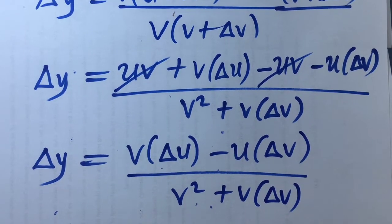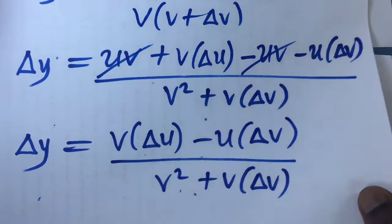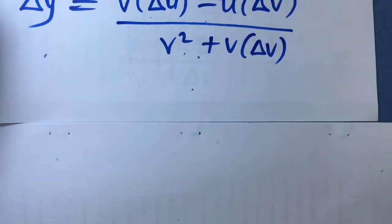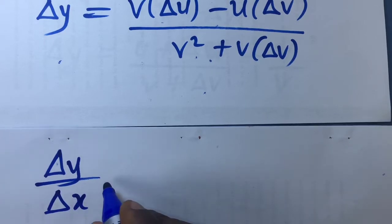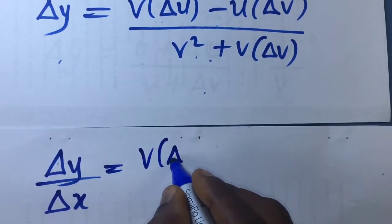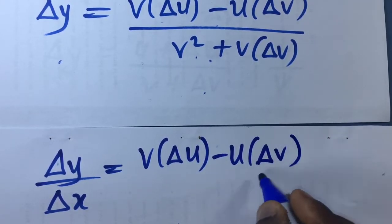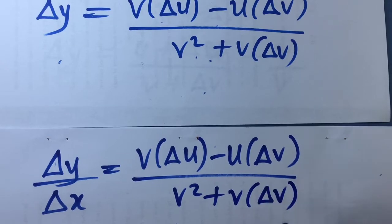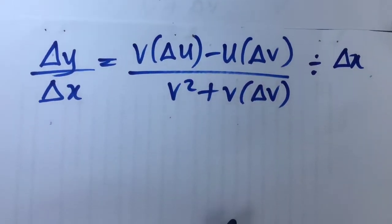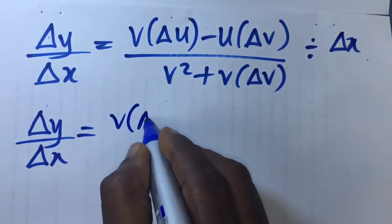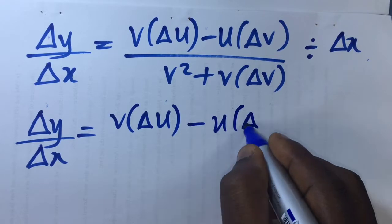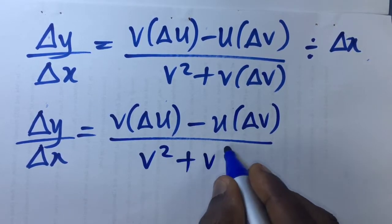Having gotten the final expression for delta y, this is the end of step 1. In step 2, I will be obtaining the gradient function. To obtain the gradient function, divide both sides of the last equation by delta x. So delta y over delta x equals v·delta u minus u·delta v, all over delta x, times 1 over v squared plus v·delta v.